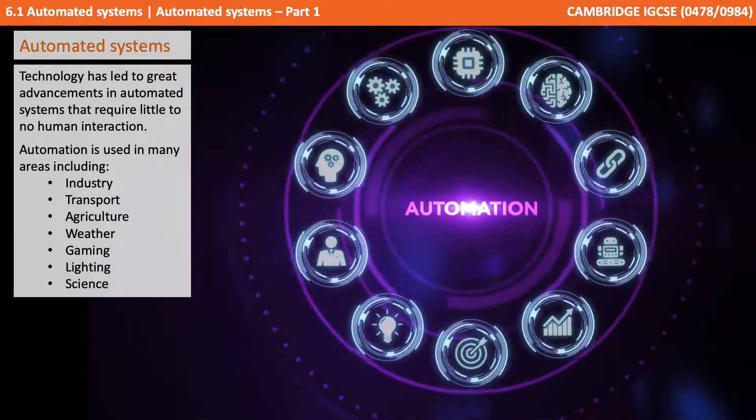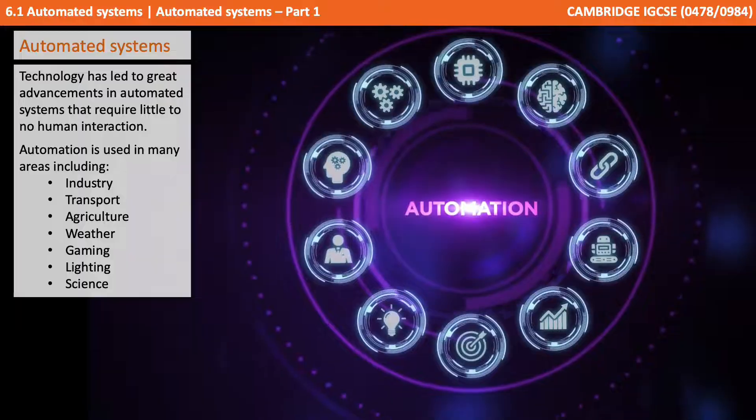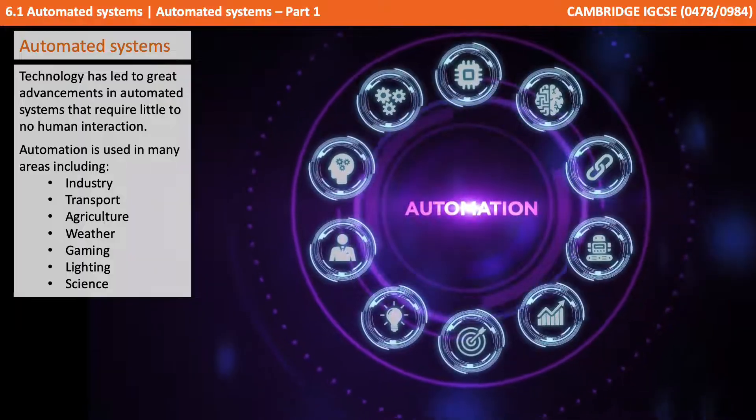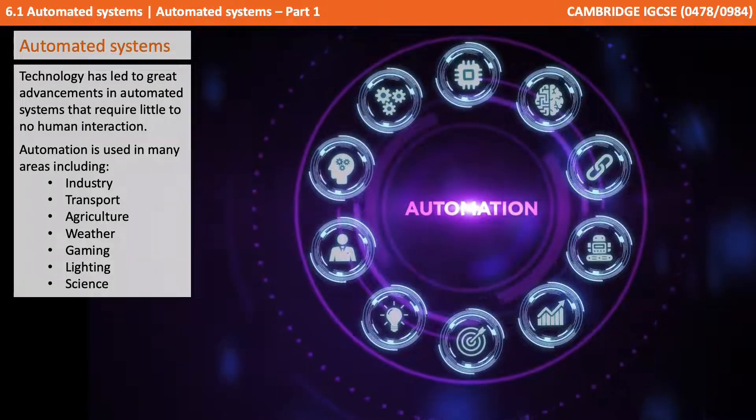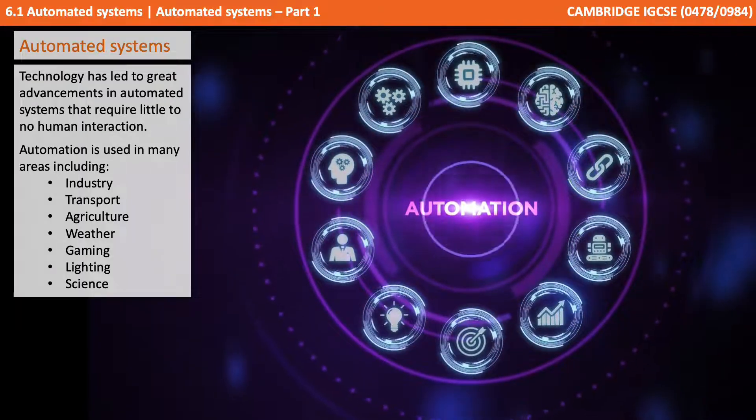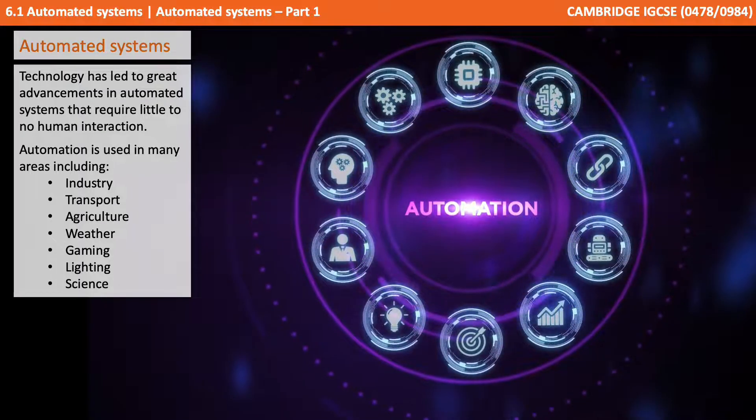Automation is used in many areas including industry, transport, agriculture, weather, gaming, lighting and science.